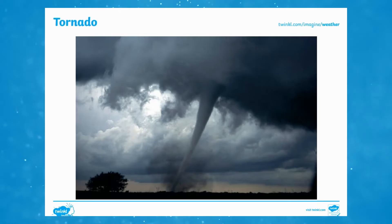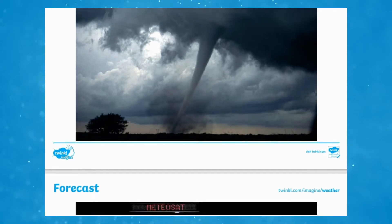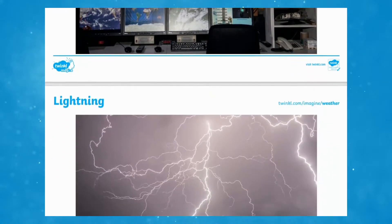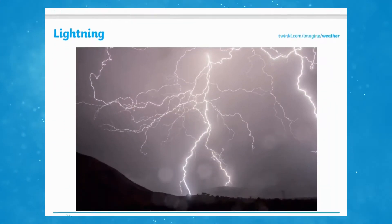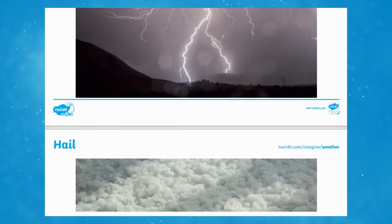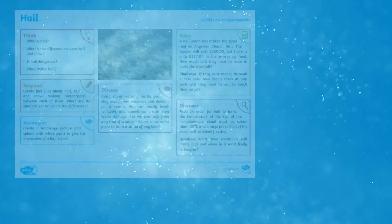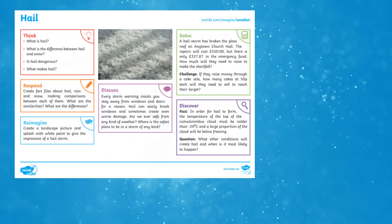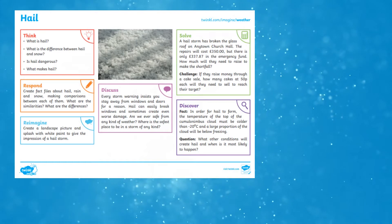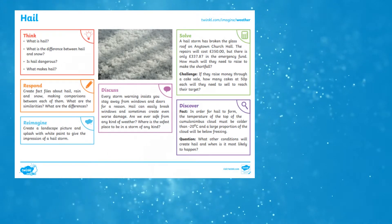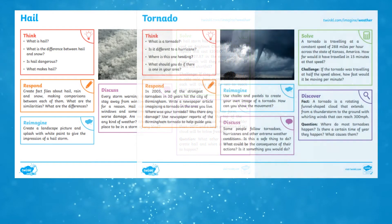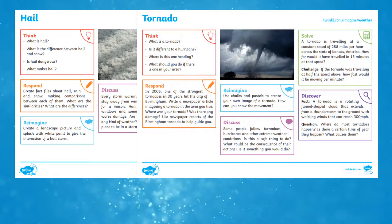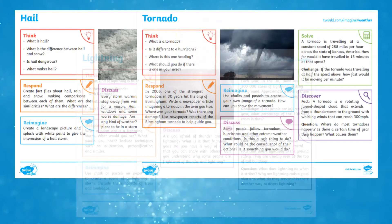The photo pack would make a brilliant display. Each photo is A4 in size and beautiful picture quality. There are five exploration sheets about different types of weather. These encourage learners to pick from a variety of tasks all linked to that type of weather.